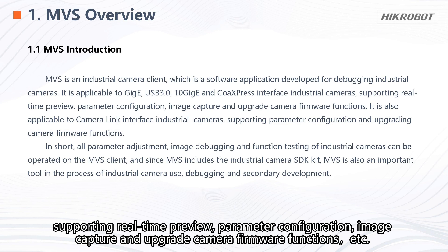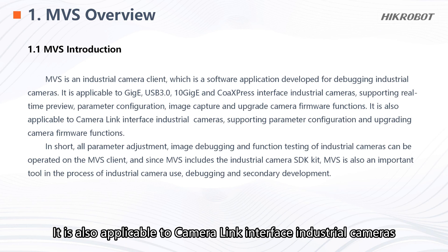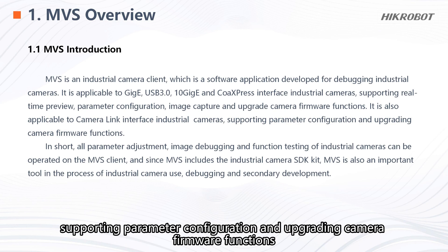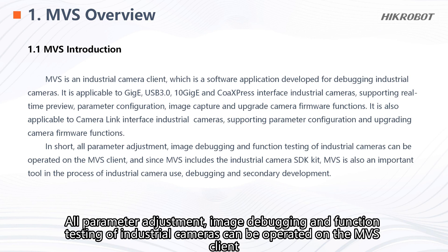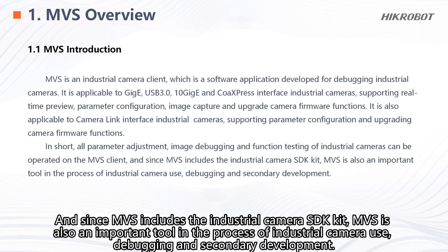It is also applicable to Camera Link interface industrial cameras, supporting parameter configuration and upgrading camera firmware functions. In short, all parameter adjustment, image debugging, and function testing of industrial cameras can be operated on the MVS client. Since MVS includes the industrial camera SDK kit, MVS is also an important tool in the process of industrial camera use, debugging, and secondary development.